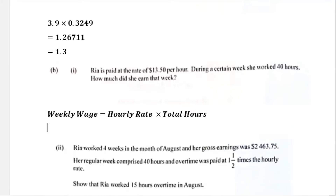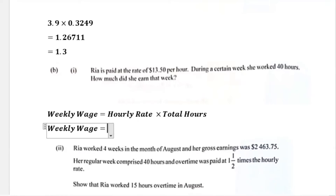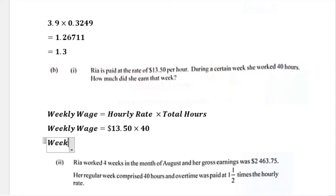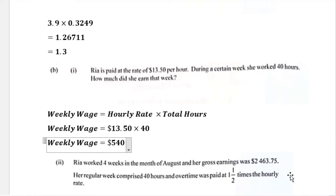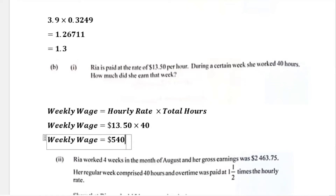So the weekly wage equals the hourly rate of $13.50 multiplied by the total hours of 40. When you do that calculation, 13.50 multiplied by 40, you get $540. Therefore in that given week where she worked 40 hours, she earned $540 as her wage.